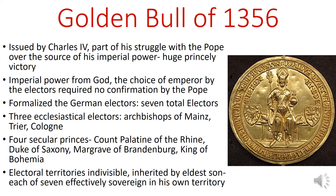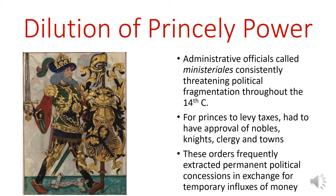Another thing about the electors is that because they're so important to the realm and make and break emperors, each of the seven is effectively sovereign in his own territory and doesn't really have to answer to the emperor very often. It might look like everything is fine if you're one of the Holy Roman princes. However, because of the tendency of the empire to have its power fragment into smaller and smaller portions, your power is going to be challenged by your own nobles and knights. There are also administrative officials called ministeriales who are a consistent threat to political unity throughout the 14th century, because they have a tendency to do what they want due to a lack of accountability.